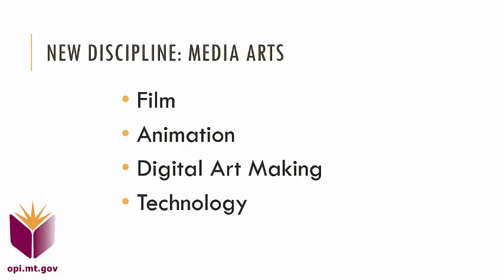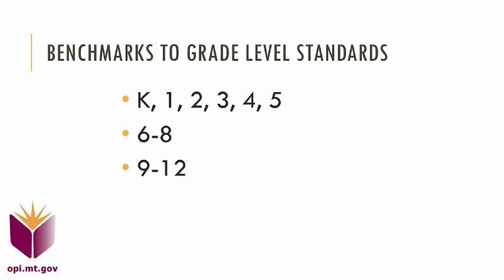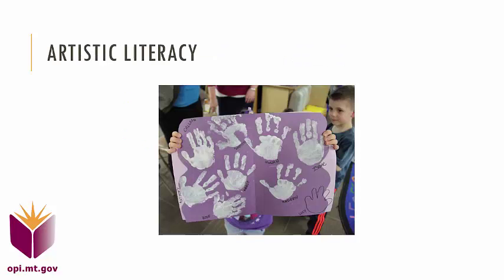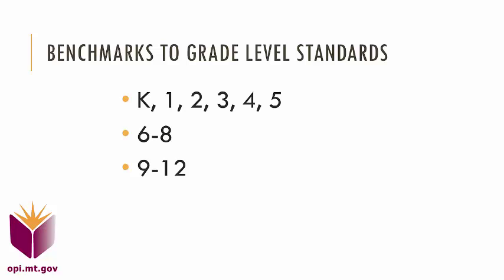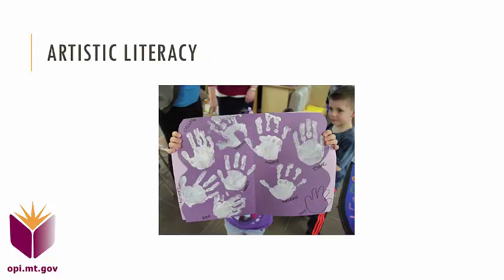The benchmarks for measuring student achievement in those areas are organized by grade level for kindergarten through fifth grade, and then by grade band for middle and high school students. The standards truly encompass the idea of artistic literacy — that is, the ability of all students to create, perform, present, critique, and connect art to their lives and the world around them.